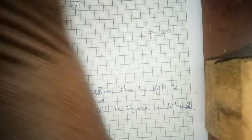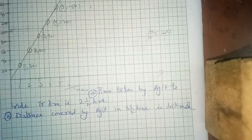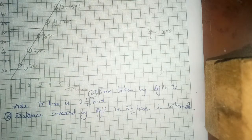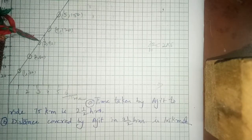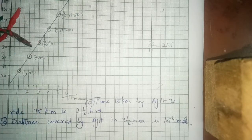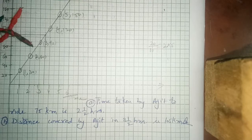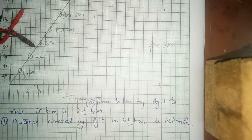Now question number 3 of exercise 15.2 is the doubt question. Points are given — write the coordinates of vertices of each of the adjoining figures. The figures have vertices labeled: A, O, B, C and P, Q, R, S and L, K, M.